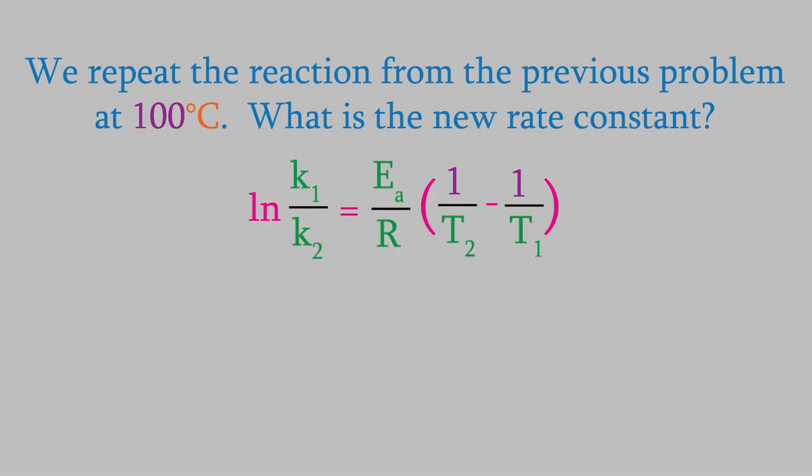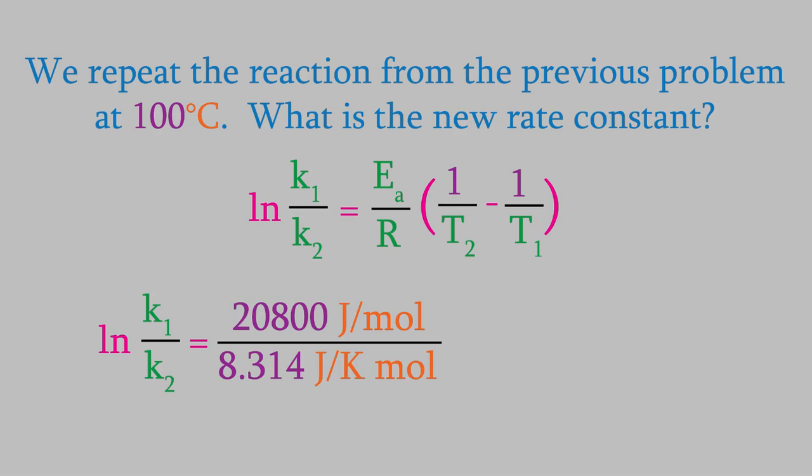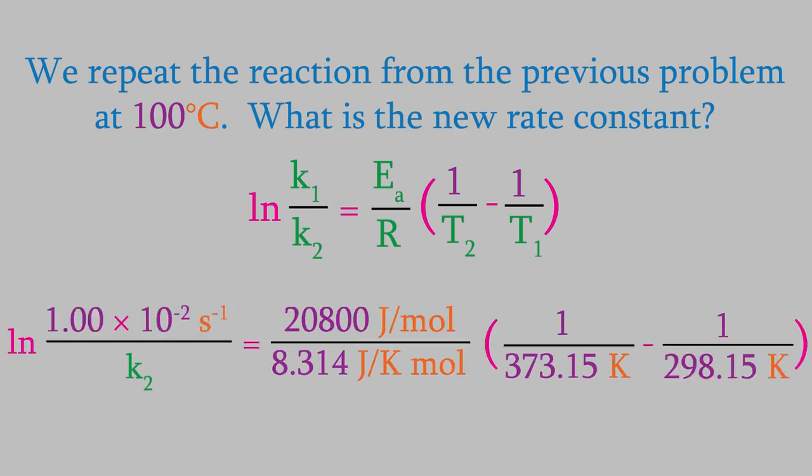We'll use this equation again. We want to know the new rate constant, so k2 is the unknown. In the previous problem, we found that Ea is 20,800 joules per mole. T2 is 100 degrees C, which is 373.15 K. We had two temperatures and rate constants in the previous problem. We can choose either of those temperatures for T1 in this problem. Let's use 25.0 degrees C, and the rate constant that went with it, which was 1.00 times 10 to the minus 2 seconds to the minus 1.